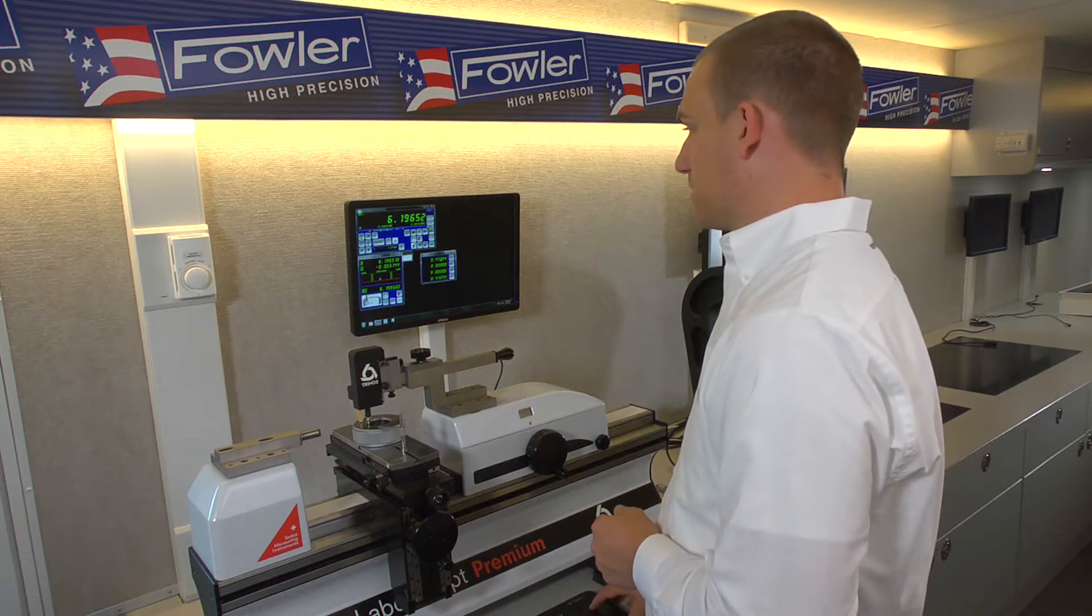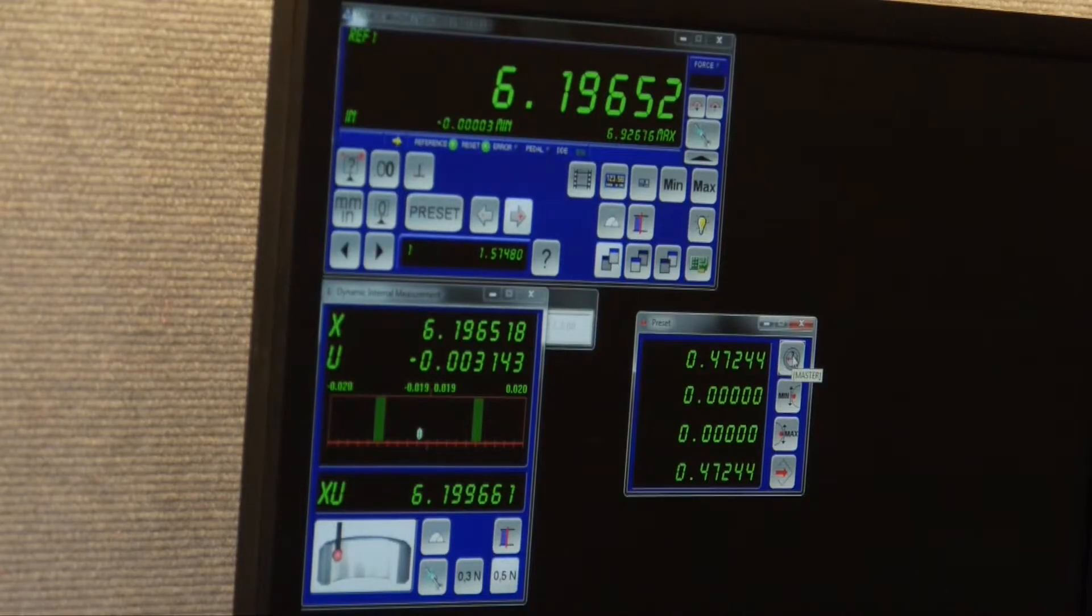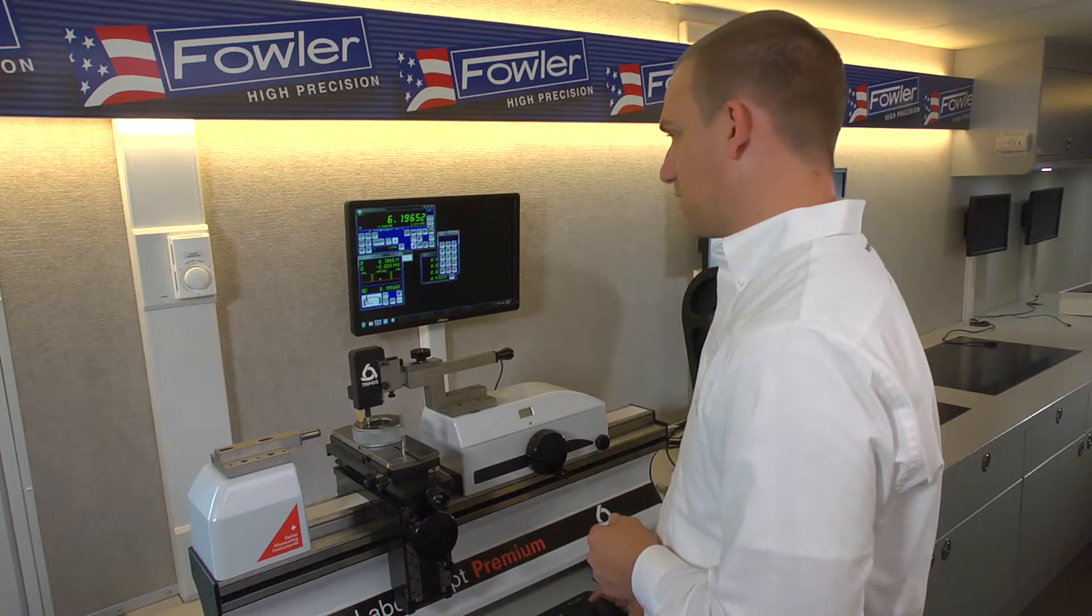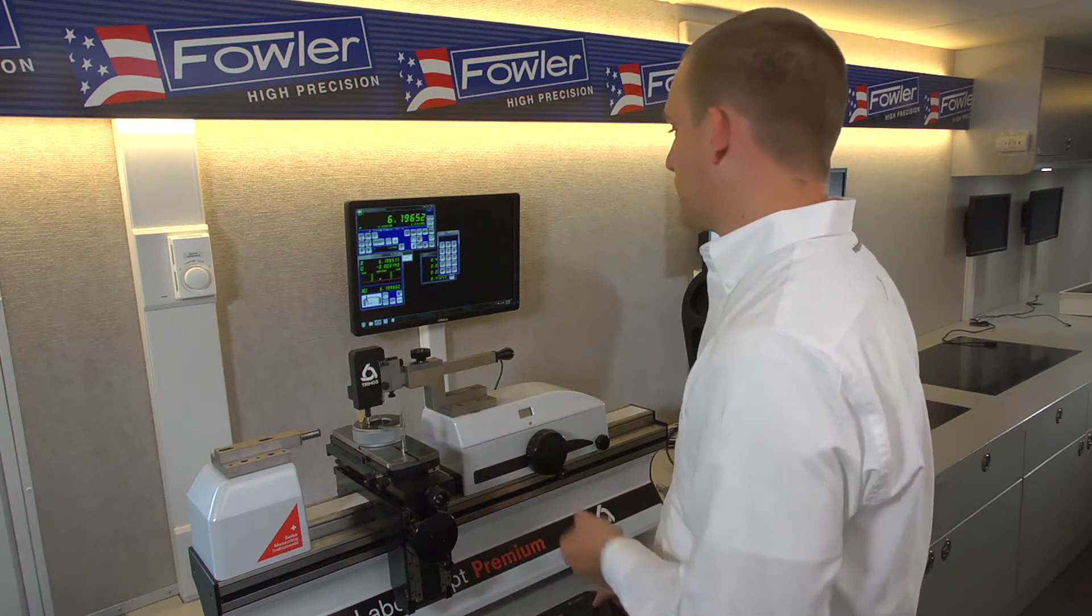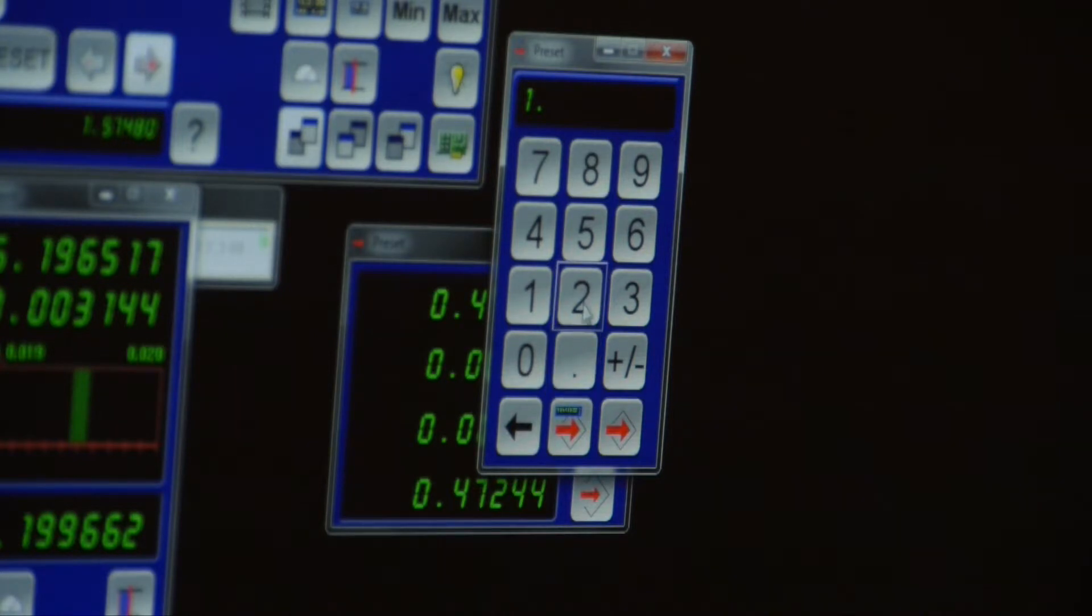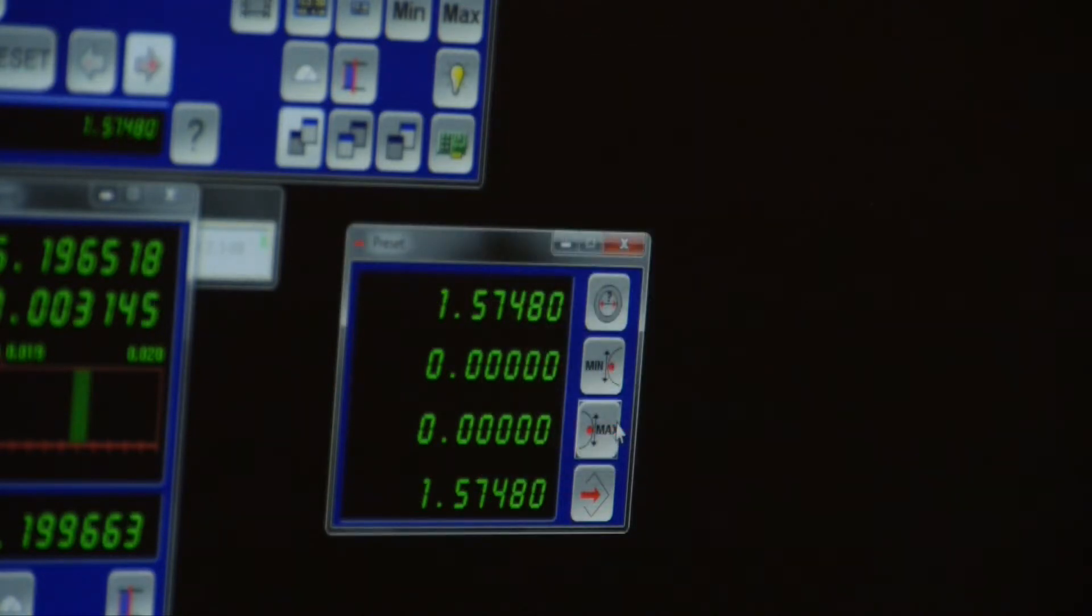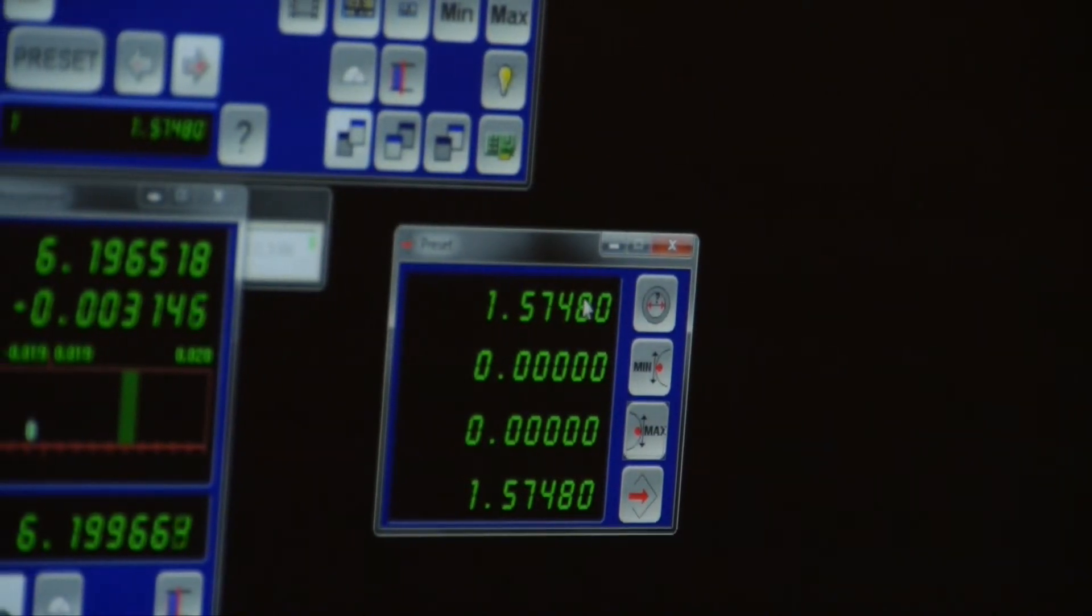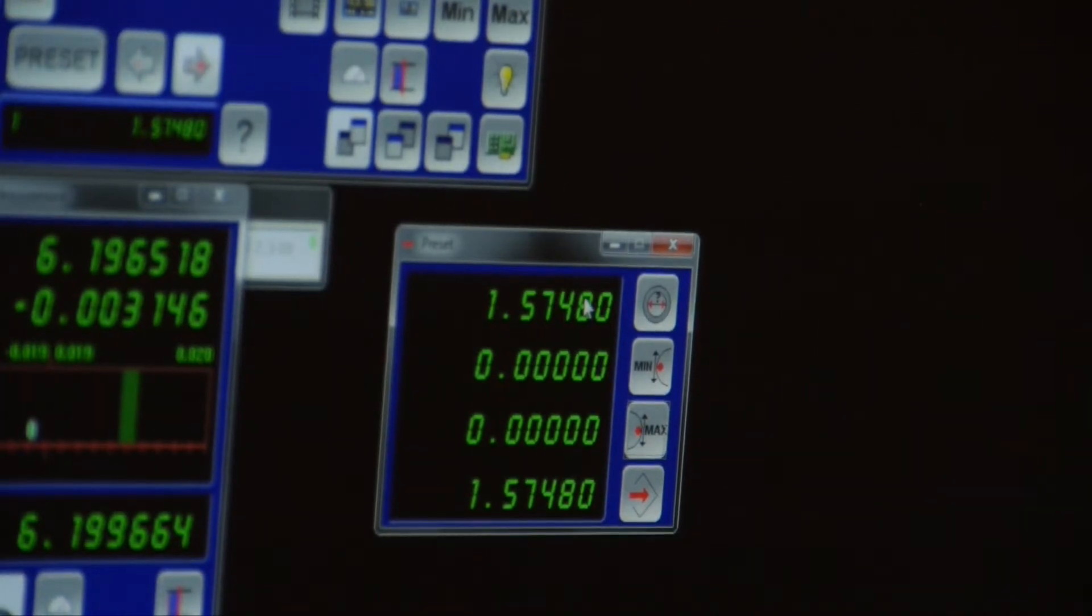The first item here is our ring diameter, which we want to enter as the inch equivalent to 40 millimeters, which is our ring size. And the bottom right button here will lock that in as our reference master size.